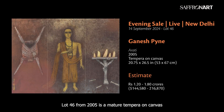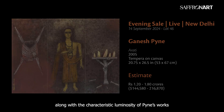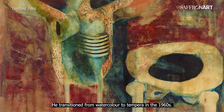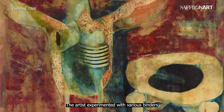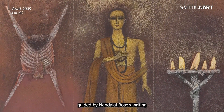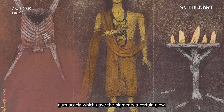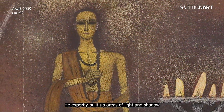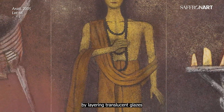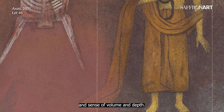Lot 46 from 2005 is a mature tempera on canvas that exhibits a similar figuration and skilled use of light and shadow, along with the characteristic luminosity of Pine's works. He transitioned from watercolour to tempera in the 1960s. The artist experimented with various binders guided by Nandlal Bose's writing in Shilpa, and ultimately chose Gum Acacia, which gave the pigments a certain glow. He expertly built up areas of light and shadow by layering translucent glazes until he achieved the required colour saturation and sense of volume and depth.